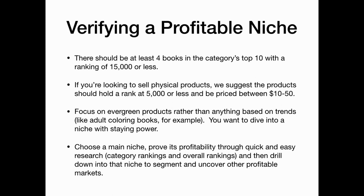Verifying a profitable niche is easy. There should be at least four books in the category's top 10 with a ranking of 15,000 or less. If you're looking to sell physical products, the product should hold a rank of 5,000 or less and be priced between $10 and $50. Focus on evergreen products rather than anything based on trends — you want to focus on niches with staying power.